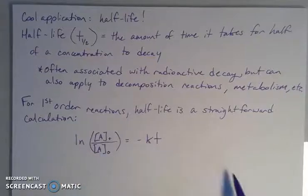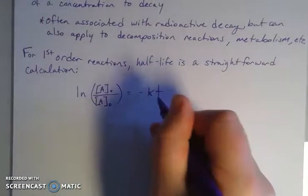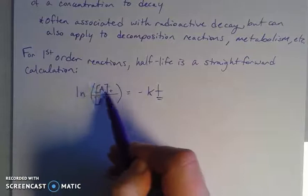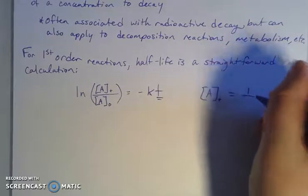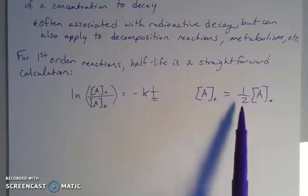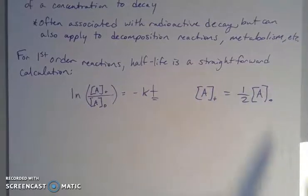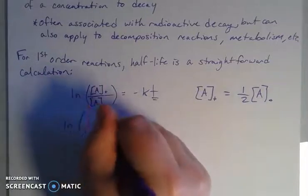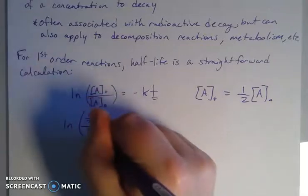For a first order reaction, the half-life is the same equation we've been using. Now we're trying to calculate the time it takes for the concentration at time T to be half of the initial concentration. If I plug one-half of A-naught over A-naught into the natural log, I get ln(1/2) over A-naught equals negative KT.